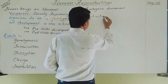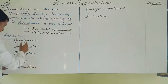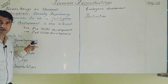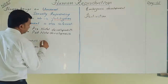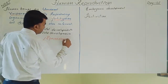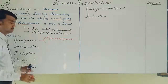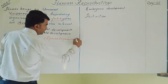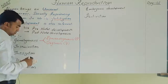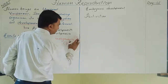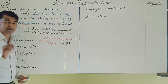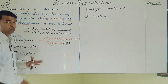Gametogenesis means the formation of haploid male and female gametes in the respective organs. Gametogenesis in the male body is called spermatogenesis, which takes place inside the testes. In the female it is called oogenesis, which takes place in the ovaries. These processes take place in the primary sex organ, that is the testes and the ovaries.